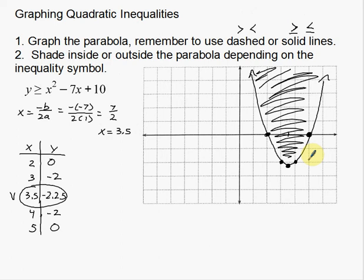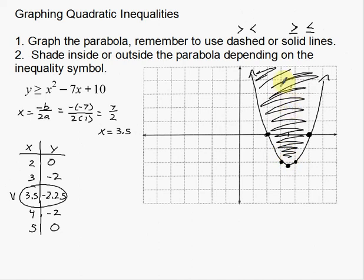That's all we have to do: graph the parabola with either dashed or solid lines, then shade inside or outside depending on the equation. In this case we shaded inside. Whether you shade inside or outside depends on if it opens up or down — rather than memorizing rules, just think logically: the y's I want are bigger than the line I created, so they're up inside the bowl. That's graphing quadratic inequalities — just a combination of graphing quadratics and graphing inequalities. I hope you enjoyed this video, thank you for watching, and we'll see you next time.